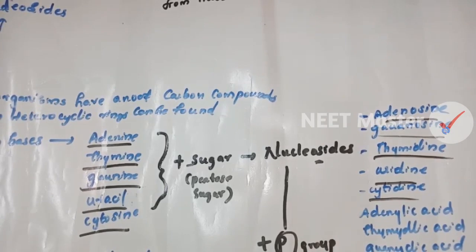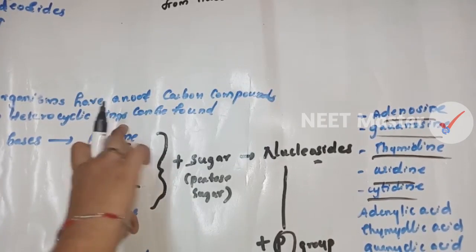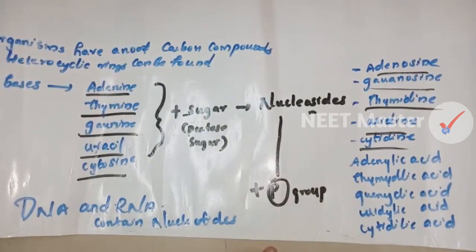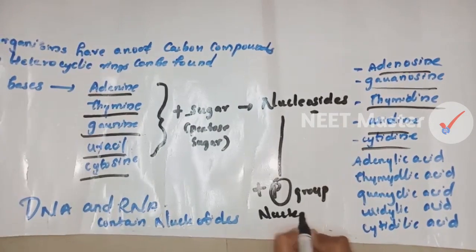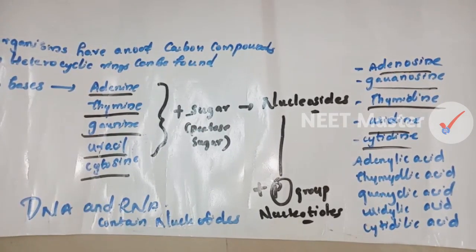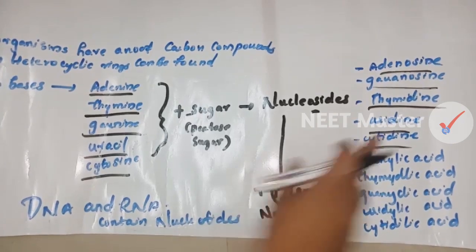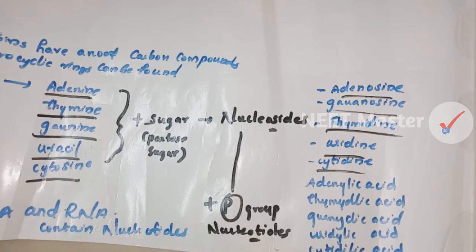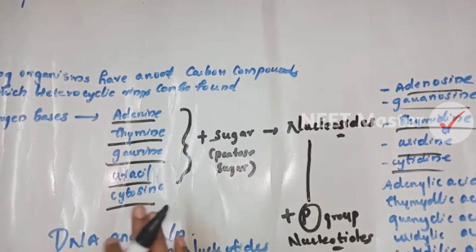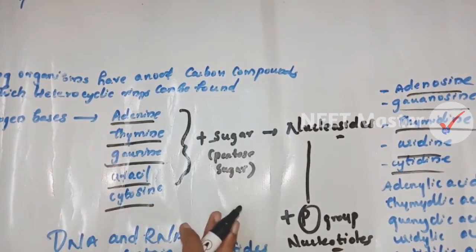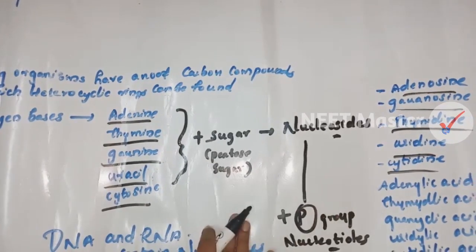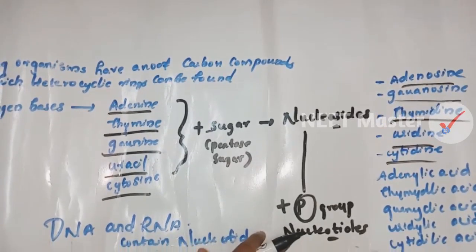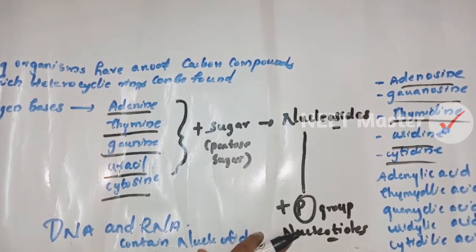This is also a phosphate group. The nucleosides plus a phosphate group form nucleotides. The nucleotide names are: Adenylic acid, Thymidine, Guanylic acid, Uridine, and Cytidine. So the components are: nitrogen base plus pentose sugar gives a nucleoside, and nucleoside plus phosphate gives a nucleotide.